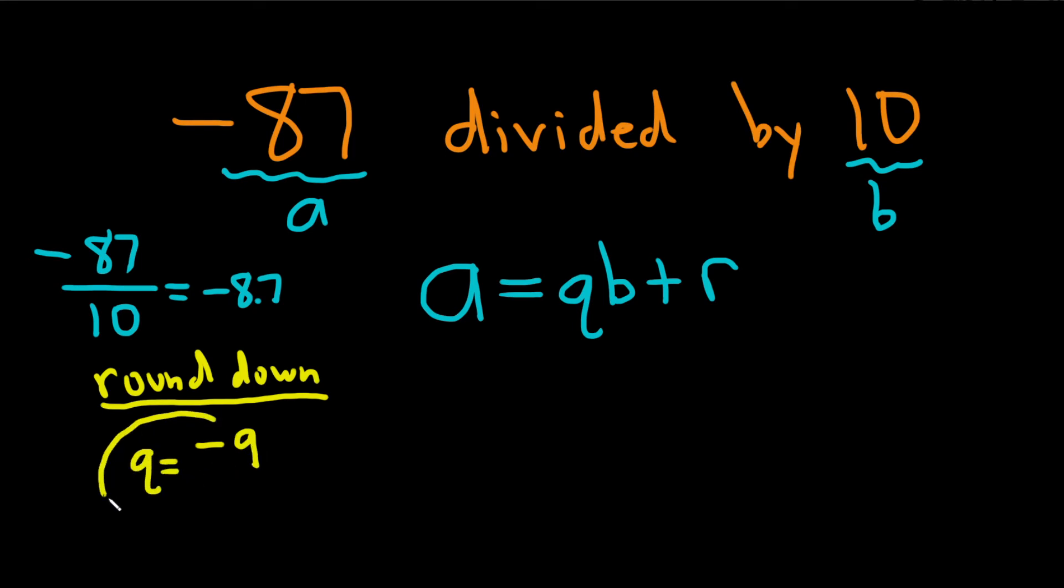Negative 9 is the number you get when you round down from negative 8.7. It's the next smallest whole number. To find the remainder, you just plug everything into your equation. So a is negative 87, q is negative 9, and then b is 10, so it will be times 10, and then plus the remainder.